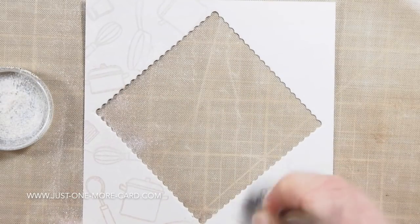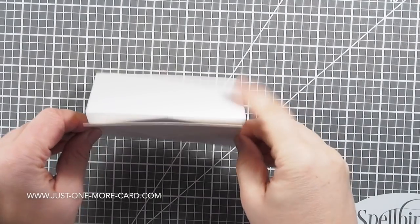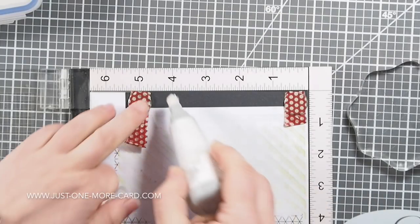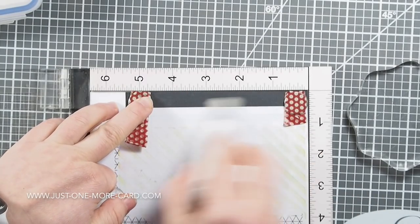When I then go in and use my Perfect Pearls powder with a very soft brush directly on top of the Versamark ink, I get a very nice subtle background effect with this light shimmer. You can very lightly spritz it with water and that will settle it so it doesn't rub off.